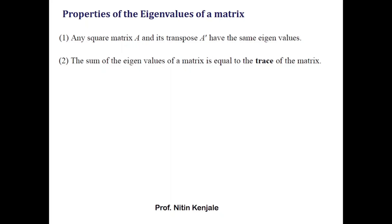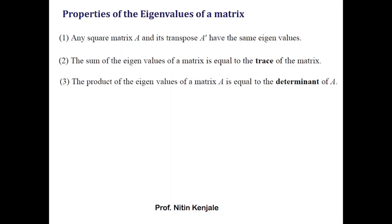The next property states that the sum of the eigenvalues of a matrix is equal to the trace of the matrix — that is, the sum of the eigenvalues is always equal to the sum of the diagonal elements. The third property states that the product of the eigenvalues of the matrix is equal to the determinant of the matrix, which is straightforward to understand.